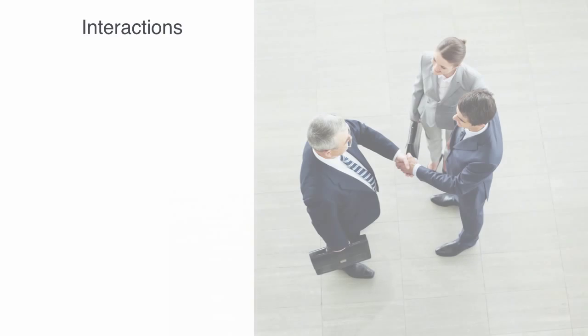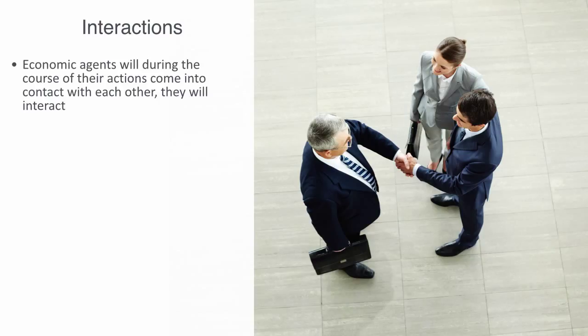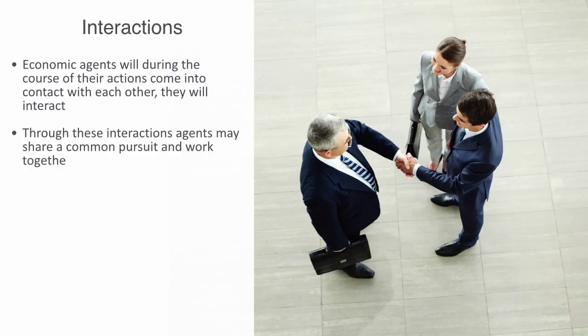These economic agents will, during the course of their actions, come into contact with each other. That is to say, they will inevitably interact. Through these interactions, agents may find that they share common pursuits and by working together, they can achieve these ends more efficiently than in isolation. Thus, they may work together by differentiating their activities with respect to each other, while all the time coordinating these activities towards the common end. In so doing, they will become interdependent. We call this type of interaction cooperation and it is a fundamental type of social interaction.